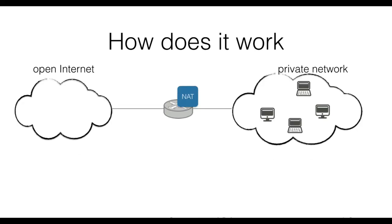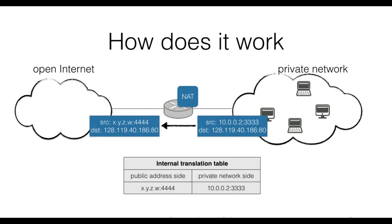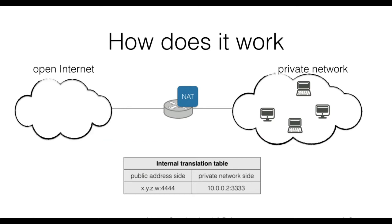To implement this translation, a NAT router needs to take care of three operations. First, to replace the source IP address and source port of each outgoing datagram with its public IP address and a new source port. Second, to keep track of this association in an internal translation table. And third, to replace for each incoming datagram its public IP address and destination port with the IP address and port that it has previously stored.